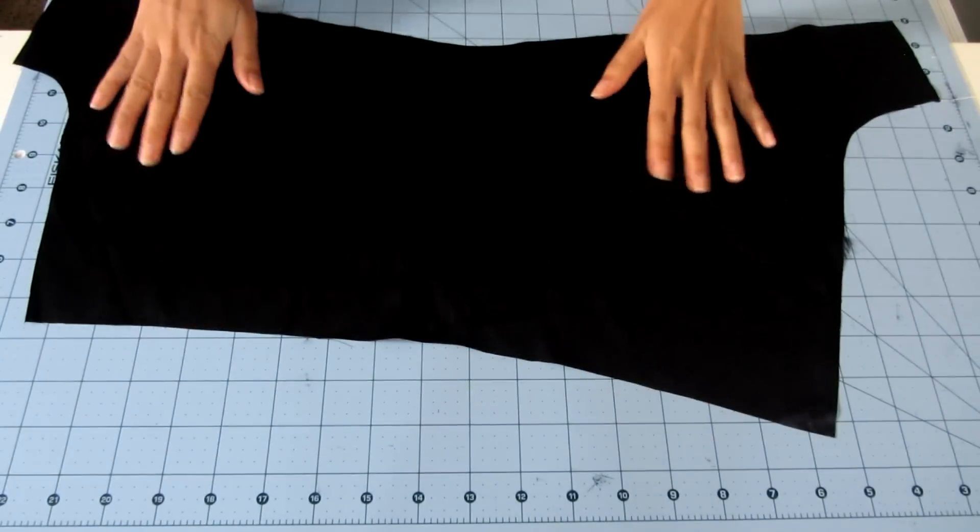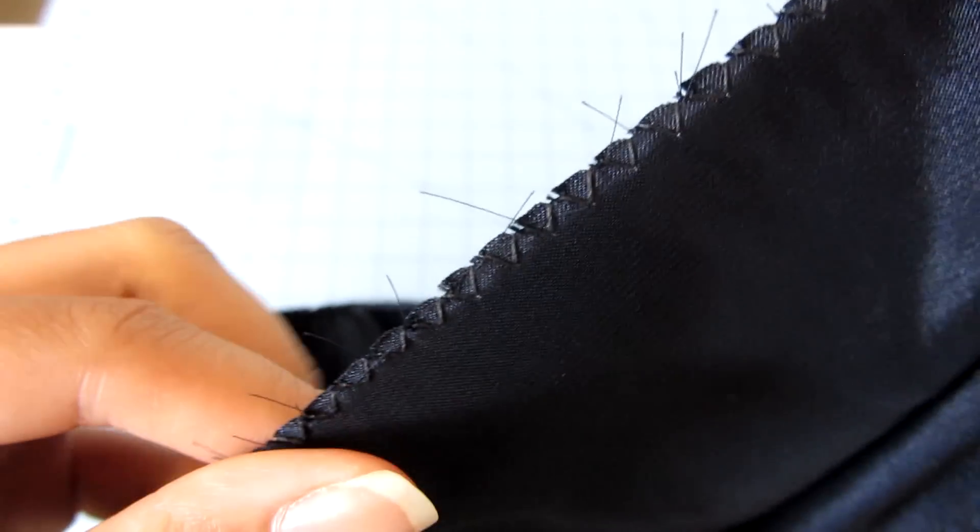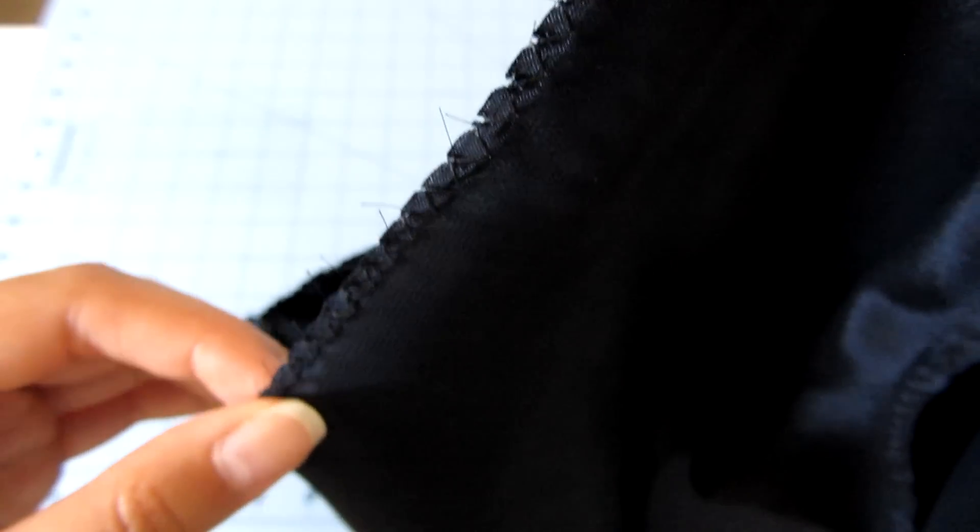Next, sew along the curves using a straight stitch, right sides together. I also used a zigzag stitch on the curves and also the waistband and leg holes to prevent fraying.